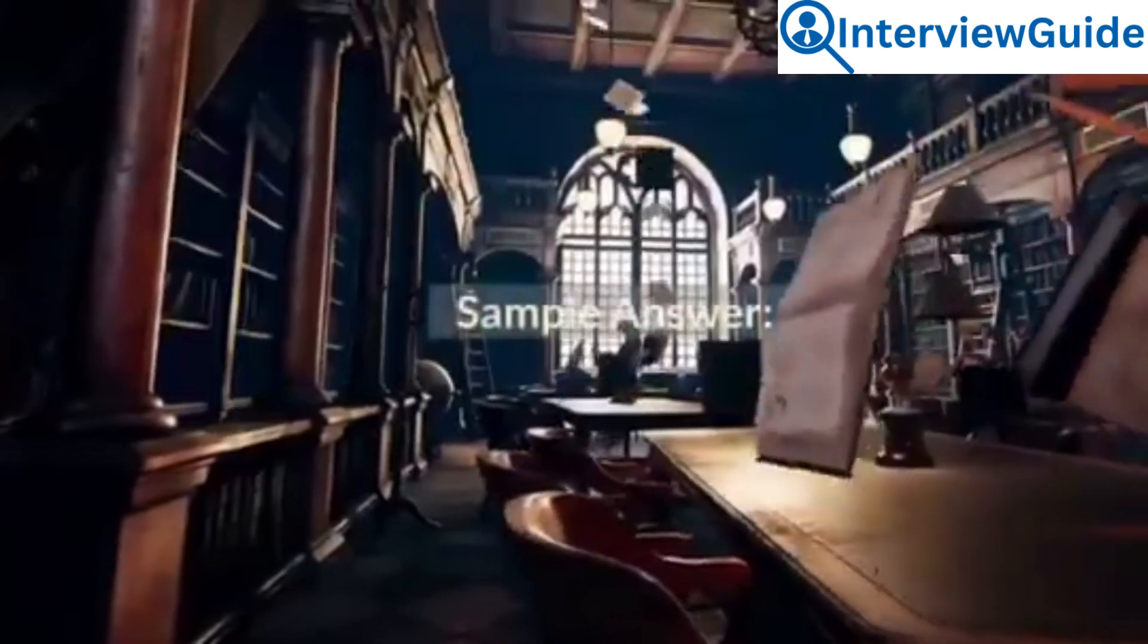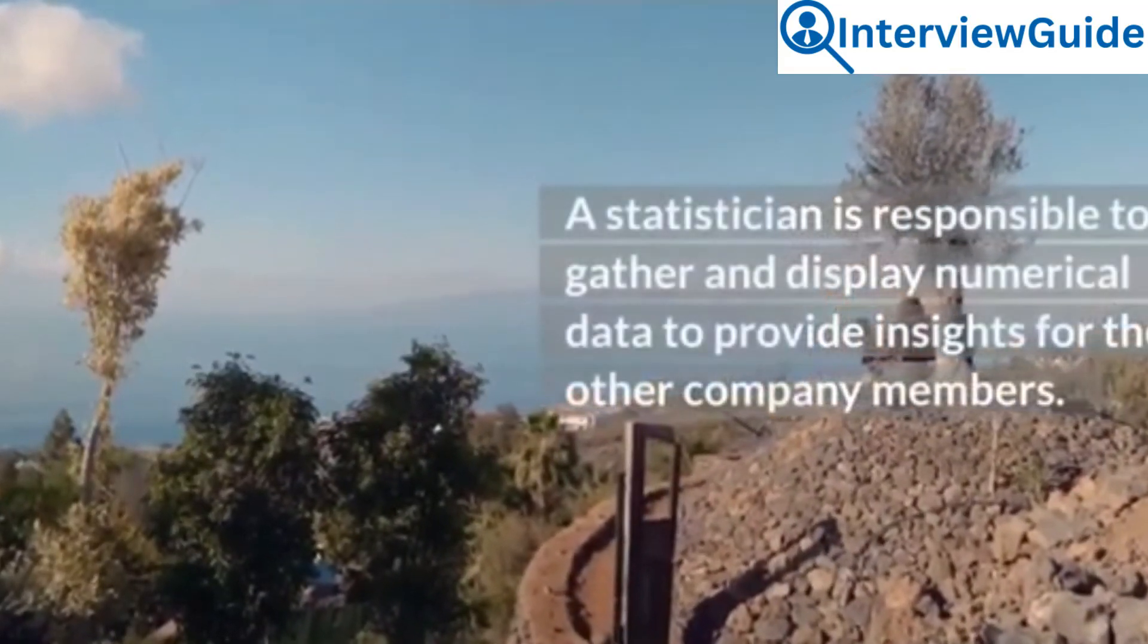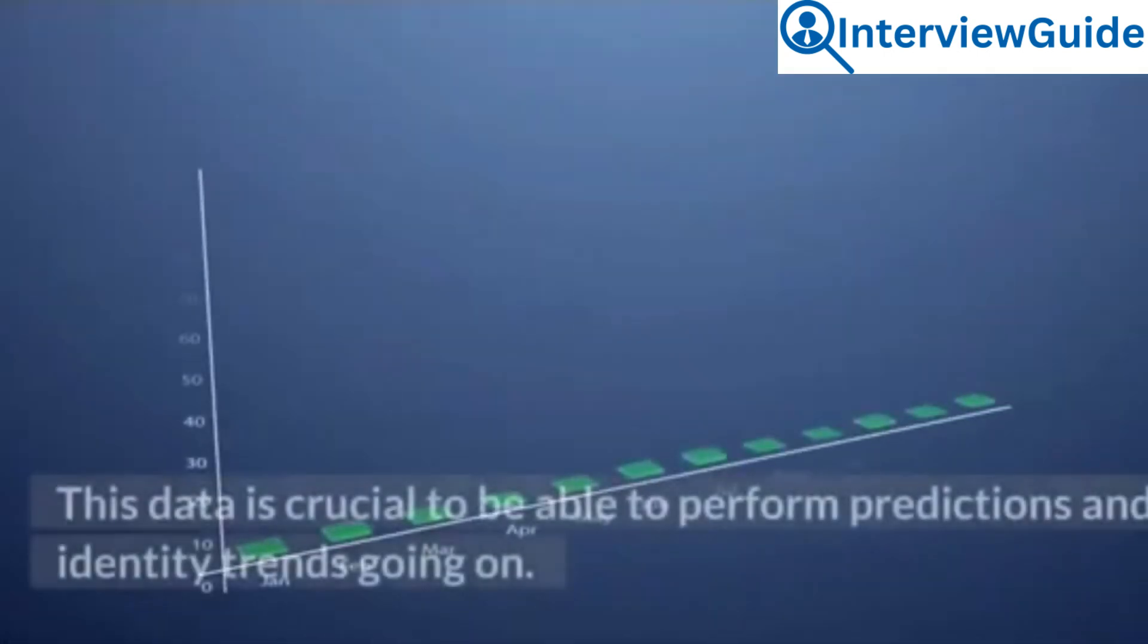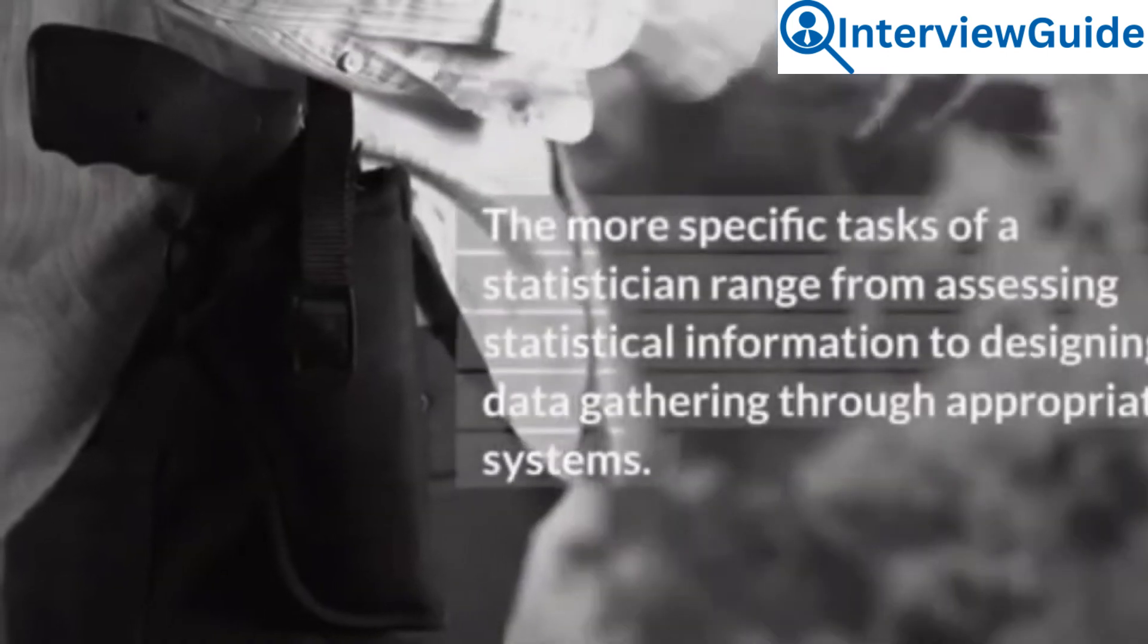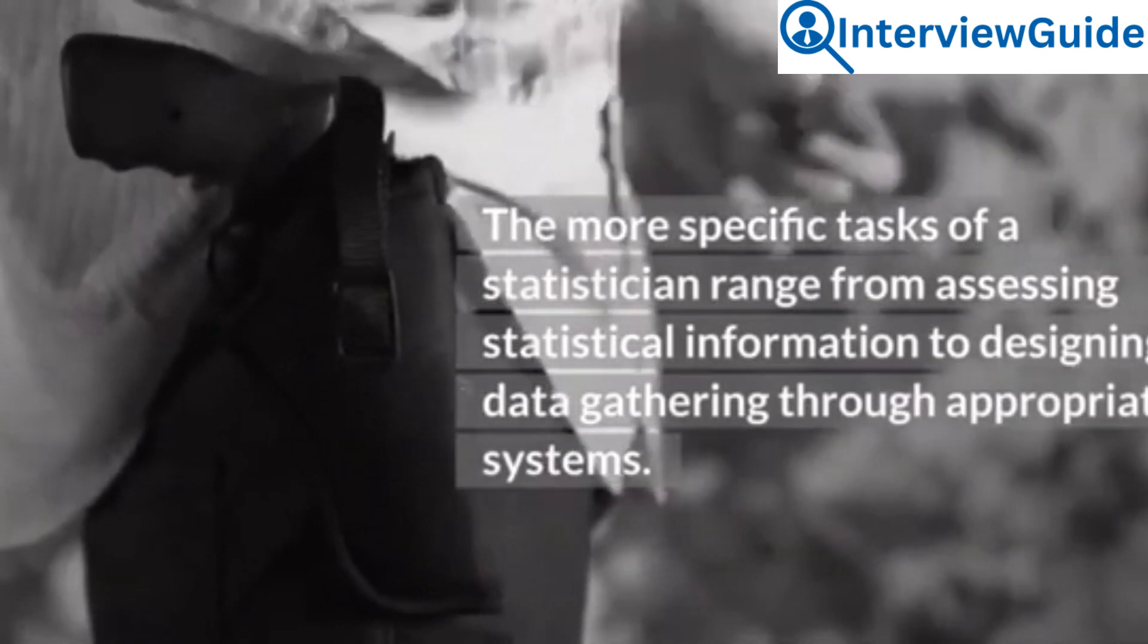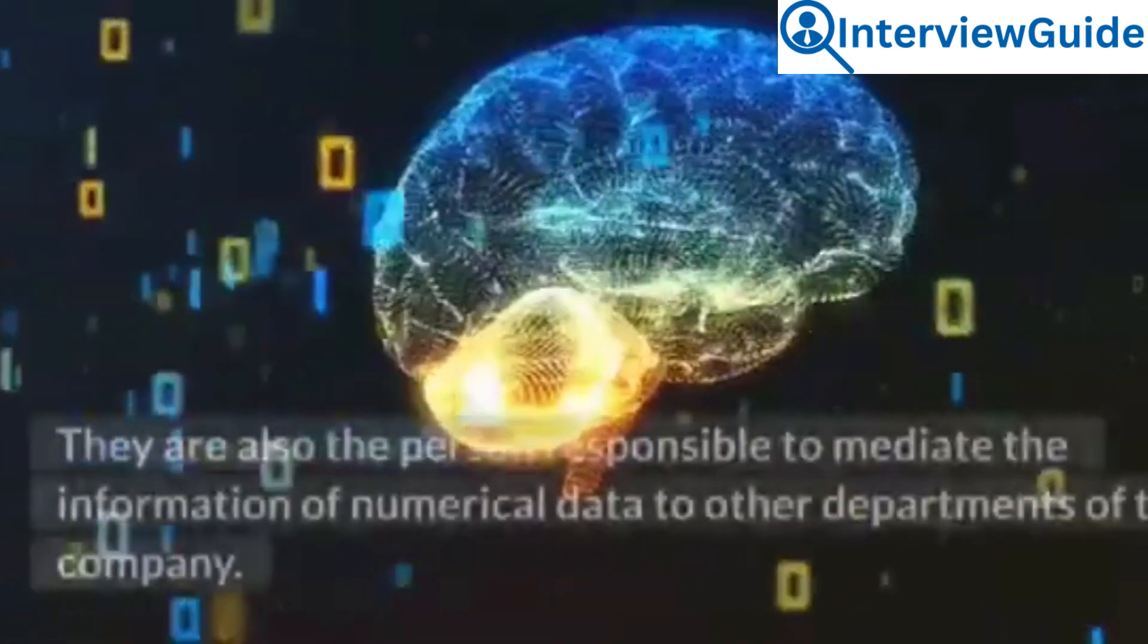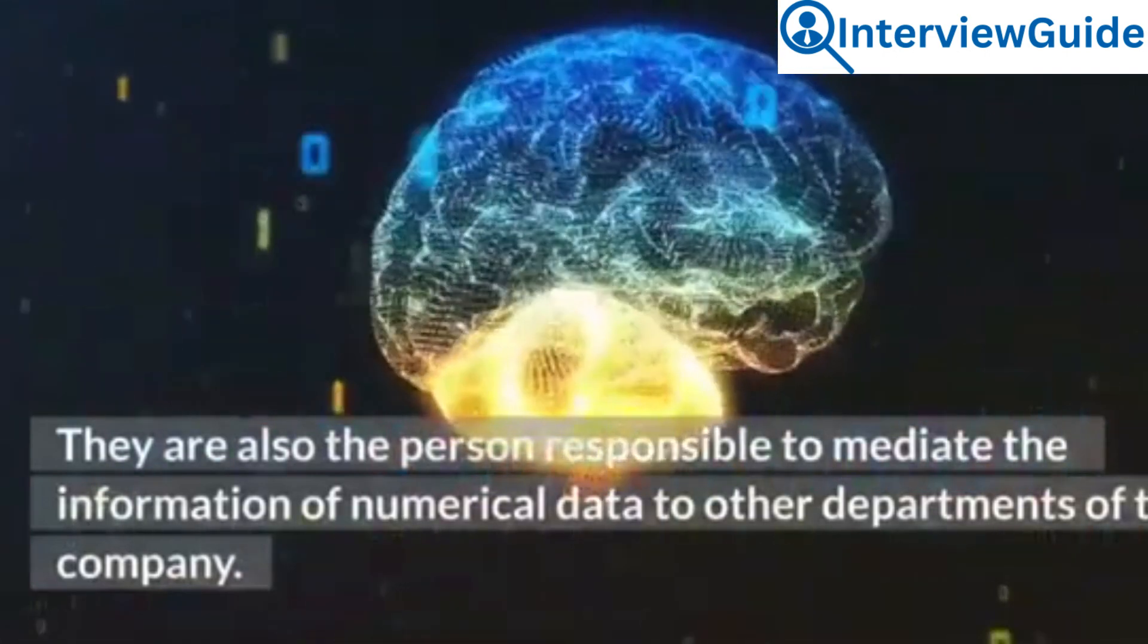Sample Answer: A statistician is responsible to gather and display numerical data to provide insights for the other company members. This data is crucial to be able to perform predictions and identify trends going on. The more specific tasks of a statistician range from assessing statistical information to designing data gathering through appropriate systems. They are also the person responsible to mediate the information of numerical data to other departments of the company.